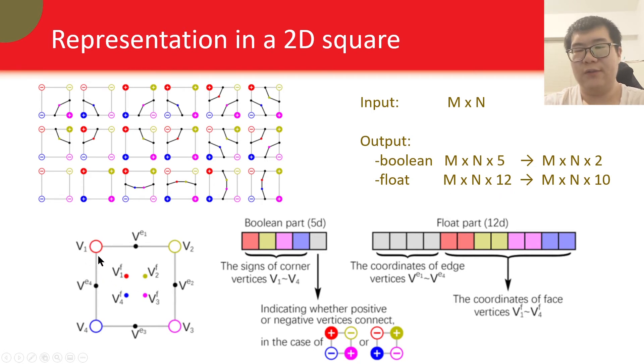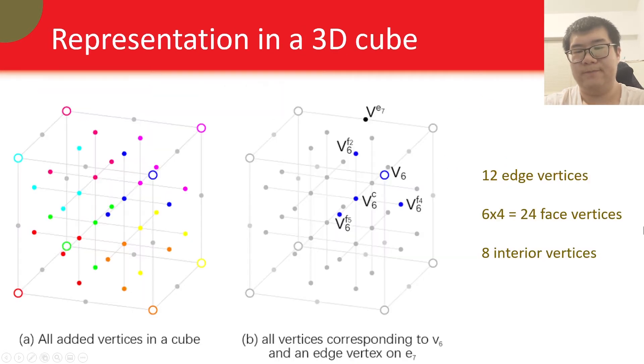After removing the duplicates, the actual output would be n by n by 2 for the boolean part, and n by n by 10 for the float part. Now we can use a network to predict those values. In this case, a simple U-Net will do. The parameterization for a cube is similar to that of a square, but it is not easy to visualize, so these figures are a bit messy. Let's just count how many additional vertices we have here.